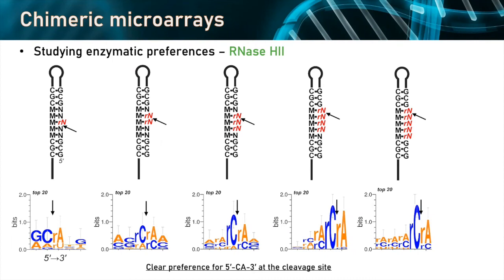Interestingly, even in the case where cleavage would be between two RNA inserts, we still see this C and A pattern. This is also a motif that was found for conventional RNase H by another group who looked at sequence preference and found a CAA trinucleotide motif indicating that RNase H cleavage works best on that CAA motif.